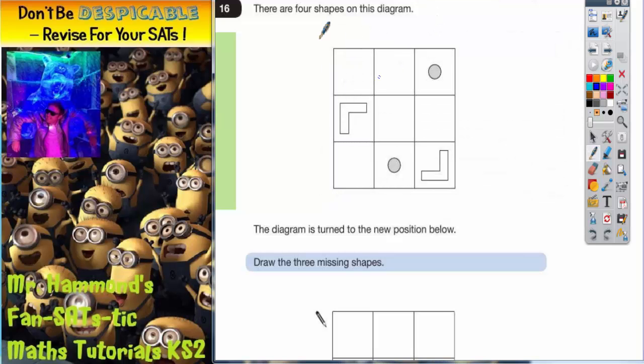Question 16. There are four shapes on this diagram. We've got two circles and then an R shape and an L shape.